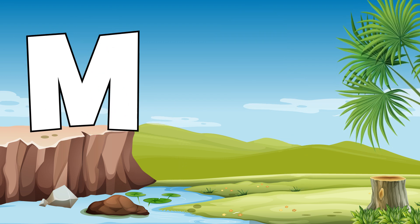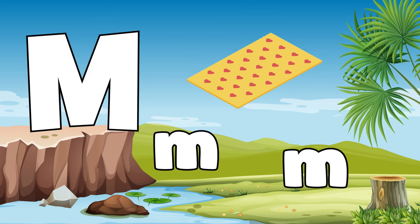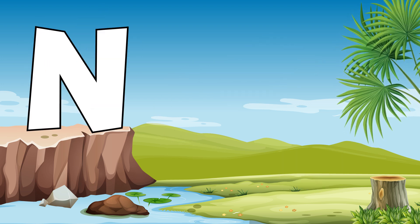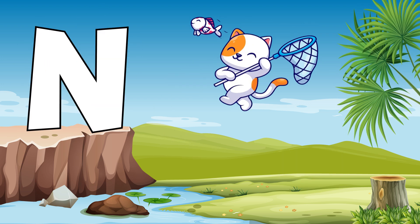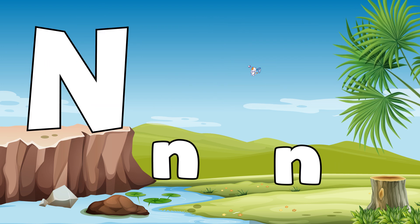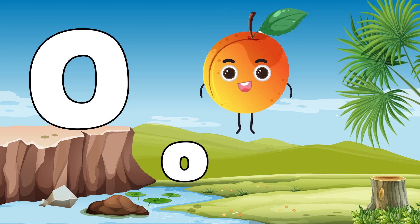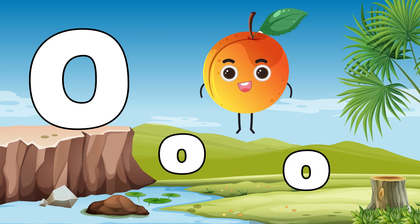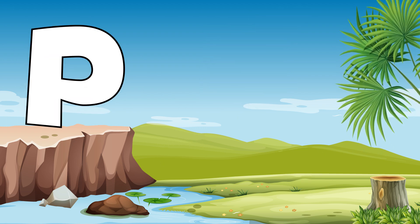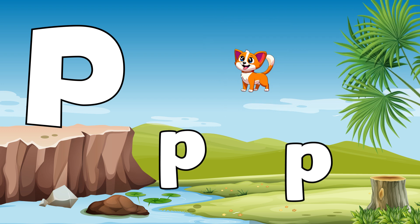M is for mat, m-m-mat. N is for net, n-n-net. O is for orange, o-o-orange. P is for pet, p-p-pet.